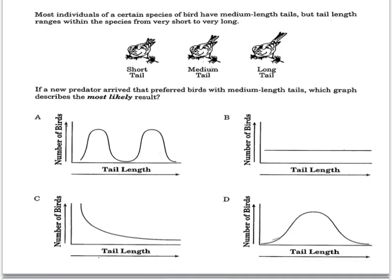Okay. Next question. Most individuals of a certain species of bird have medium-length tails, but tail length ranges within the species from very short to very long. If a new predator arrived that preferred birds with medium-length tails, which graph would describe the most likely result?